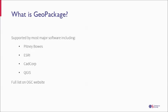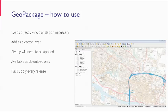There's a long list of software that supports GeoPackage — a full list is on the OGC website. I've just pulled out a few that I think a lot of our customers use: Pitney Bowes, Esri, MapInfo and QGIS all support it. In terms of how to use it, it's an easy drag-and-drop format that loads directly into software packages, removing the need for translators. You can apply styling in the same way you would to any other file, and it's easy to use in whatever GIS software you've chosen. For VectorMap Local, GeoPackage is available as download only and will be full supply every release.